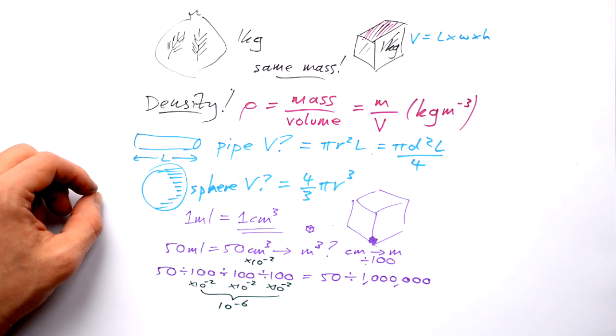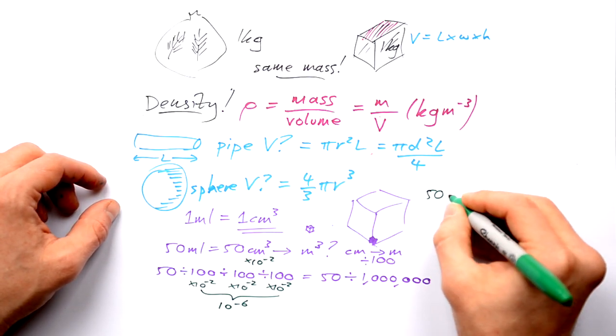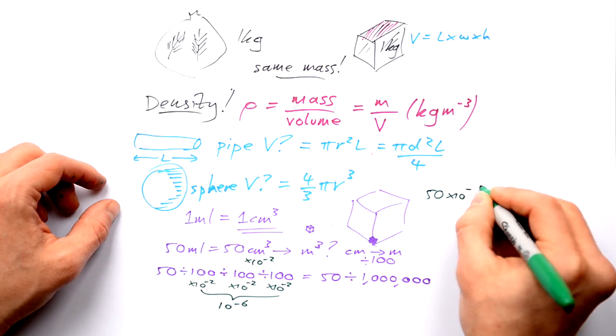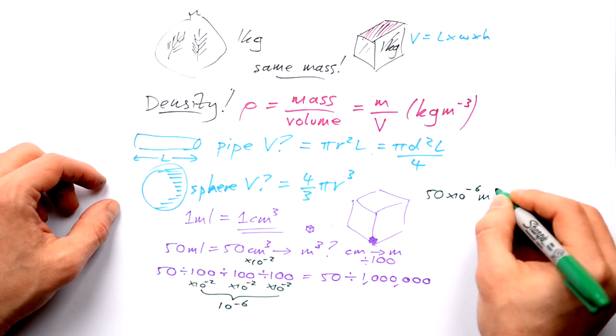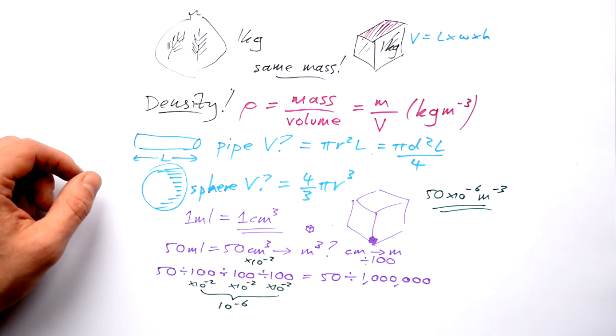So to convert centimeters cubed, that's milliliters into meters cubed, all I have to do is do 50 times 10 to the minus 6 meters cubed. And there's my answer. And I can leave it in standard form.